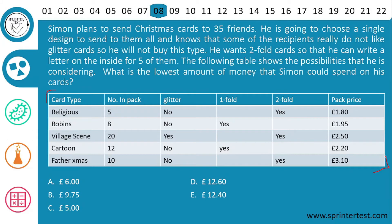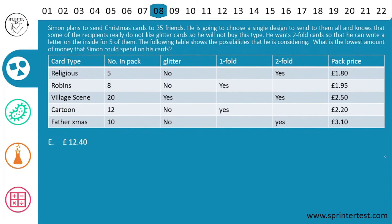The correct answer is E, 12 pounds and 40 pence. This is a little tricky but easy to tackle. They mention some recipients do not like glitter cards, so we remove the village scene card which has glitter. Then, since he needs a single design and wants 2-fold cards so he can write on the inside, that means he will choose 2-fold cards for all 35 people. So we remove the 1-fold cards — Robins and Cartons are eliminated.